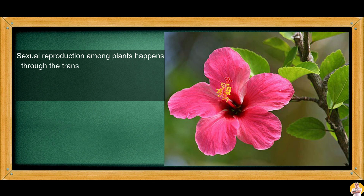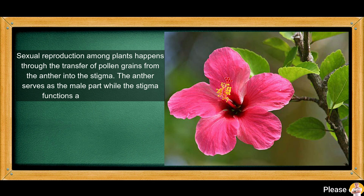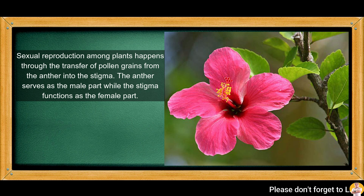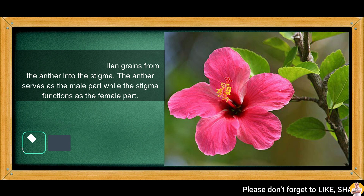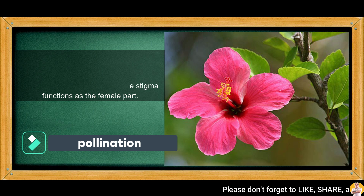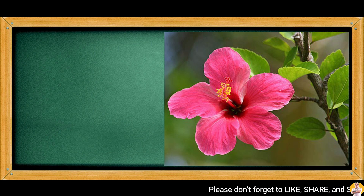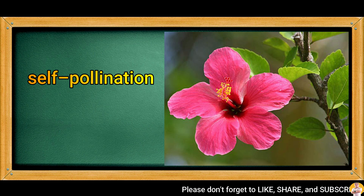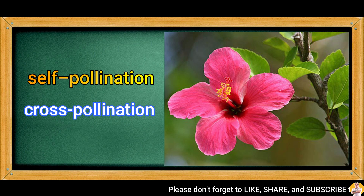Sexual reproduction among plants happens through the transfer of pollen grains from the anther to the stigma. The anther serves as the male part while the stigma functions as the female part. This process is called pollination. There are two types of pollination: self-pollination and cross-pollination.